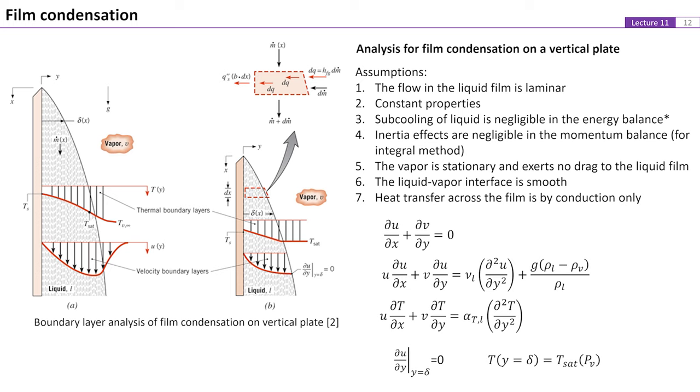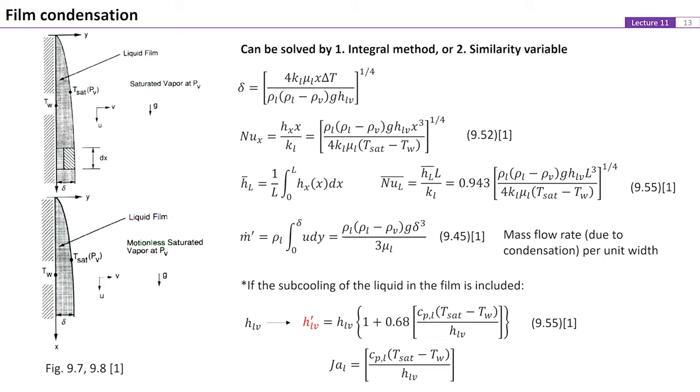A set of continuity equation, momentum equation, and energy equation can be obtained as shown here on the slide. Note that the pressure gradient in the liquid film, partial p partial x, is approximated by the hydrostatic pressure gradient in the vapor phase. Similar to classical boundary layer problems, this set of equations could be solved by integral method or by using similarity variable. The results include the thickness of the liquid film as function of x, the convective heat transfer coefficient or the Nusselt number, and the mass flow rate of the fluid across the liquid vapor interface due to condensation. Detailed information regarding these derivations can be found in the references.